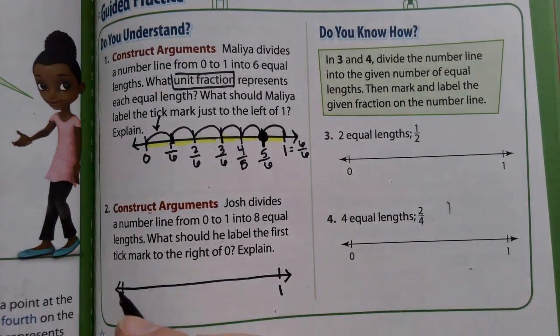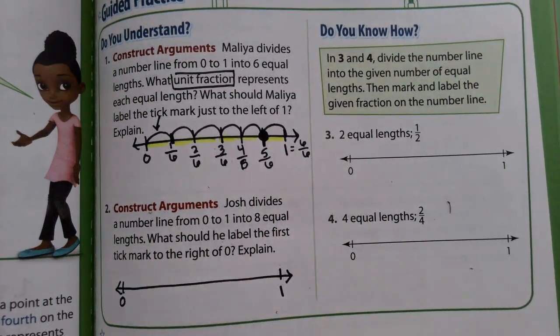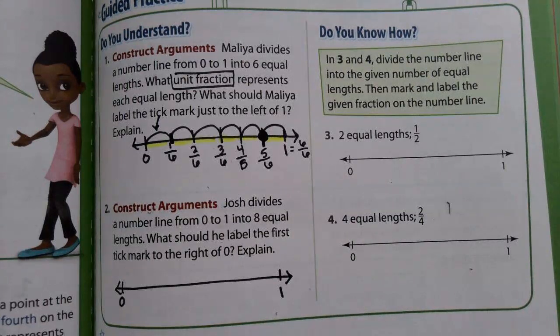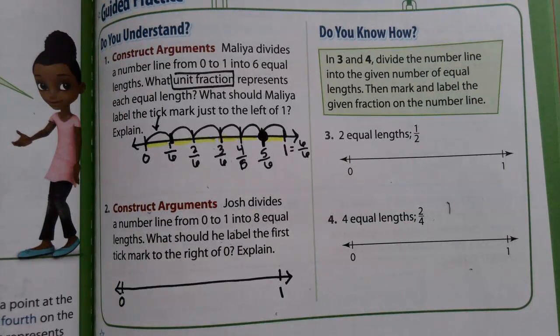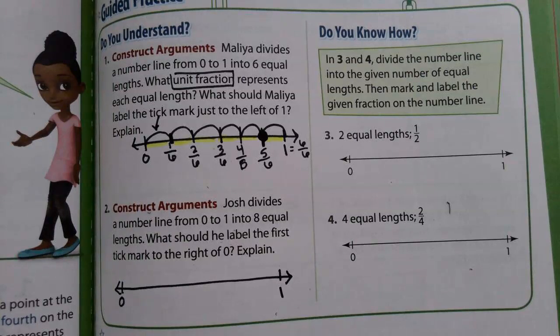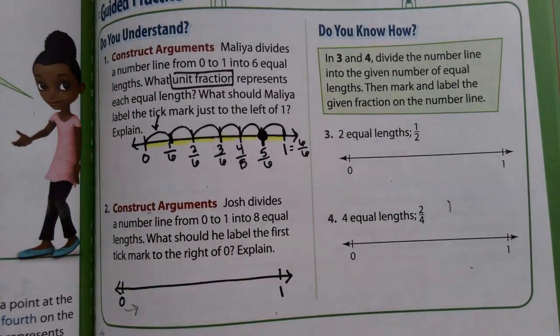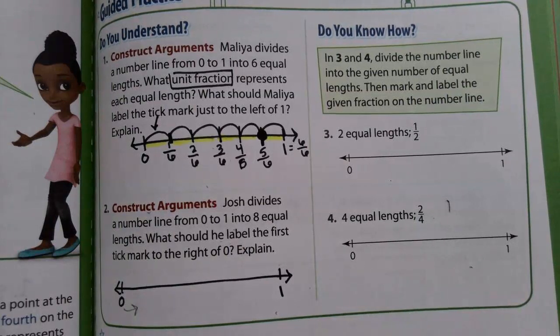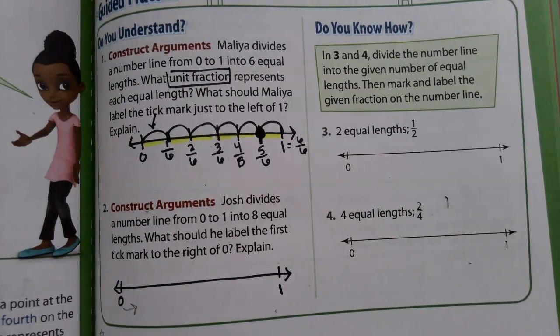Step 2, draw your tick marks. And step 3, label the fractions. 1 hop out of 8, 2 hops out of 8. And when you land on 1, you should have 8 out of 8 hops. So what does the fraction to the right of 0 equal? What is that fraction? What out of 8?